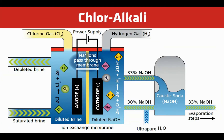Here we have an overview of the chemistry occurring within the membrane cell. Saturated brine enters the first chamber where chloride ions are oxidized at the anode and become chlorine gas. At the cathode, positive hydrogen ions are reduced to hydrogen gas, releasing hydroxide ions into the solution. The membrane at the center of the cell allows sodium ions to pass to the second chamber, where they react with the hydroxide ions to produce sodium hydroxide.